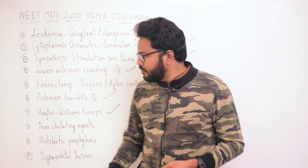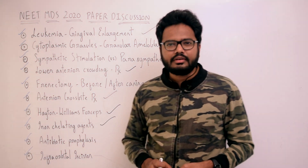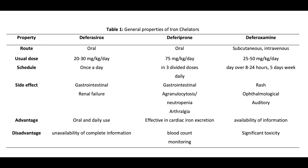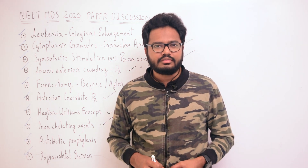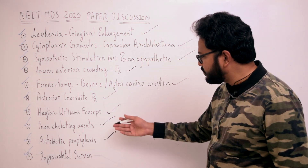Moving on to iron chelating agents — which one is given intravenously? Reviewing iron chelating agents and their routes of administration: desferasirox, deferiprone, and deferoxamine — of which deferoxamine is given either subcutaneously or through the intravenous route.